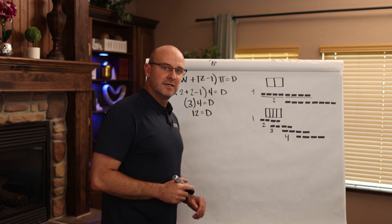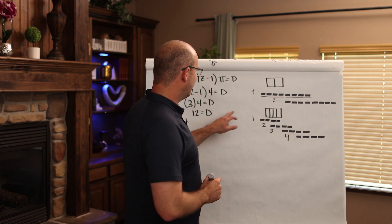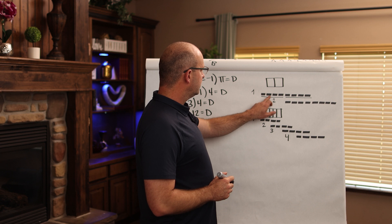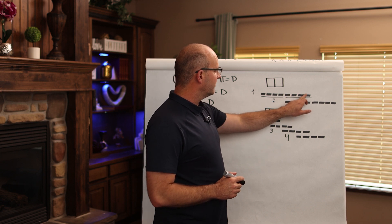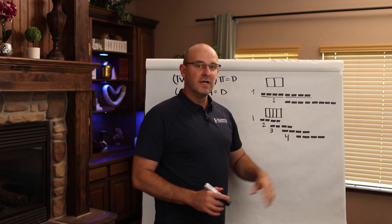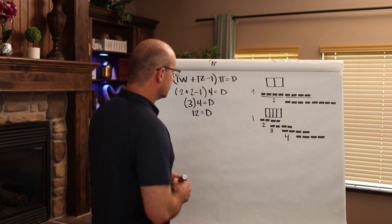Let's go ahead and check this. Counting the units: one through twelve — yes, 12. So you see how the tact time formula worked.